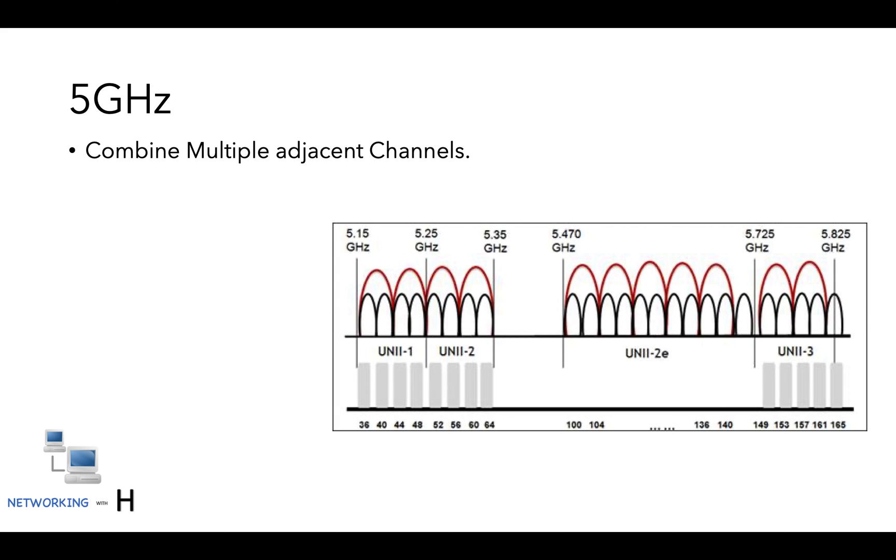Since there are more channels available in the 5 gigahertz radio, the client and AP can combine multiple adjacent channels to transfer a message and achieve high speeds. This is called channel bonding, and this is essentially one of the reasons behind higher throughput for different standards.